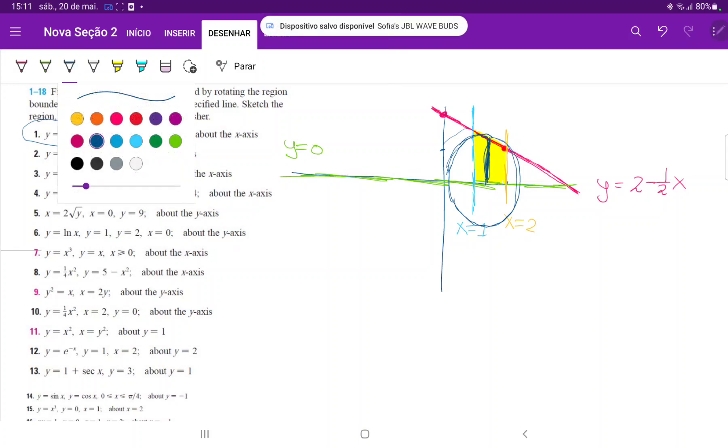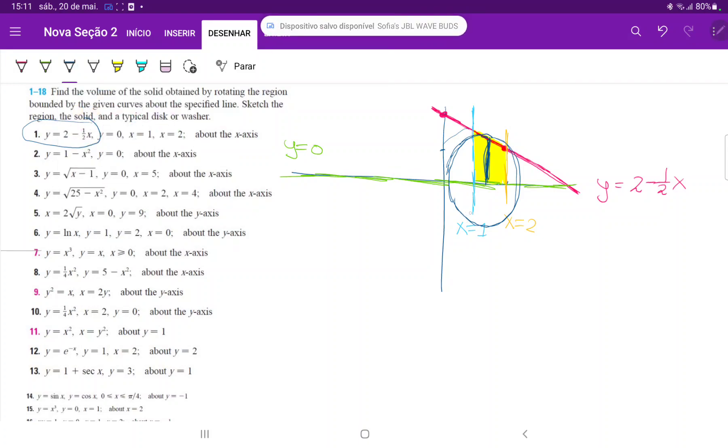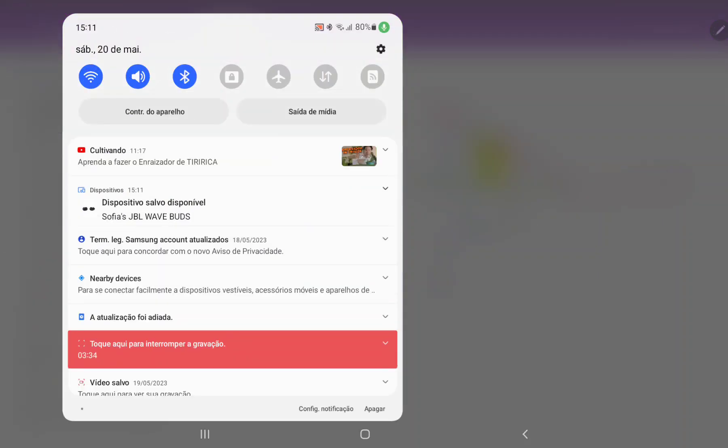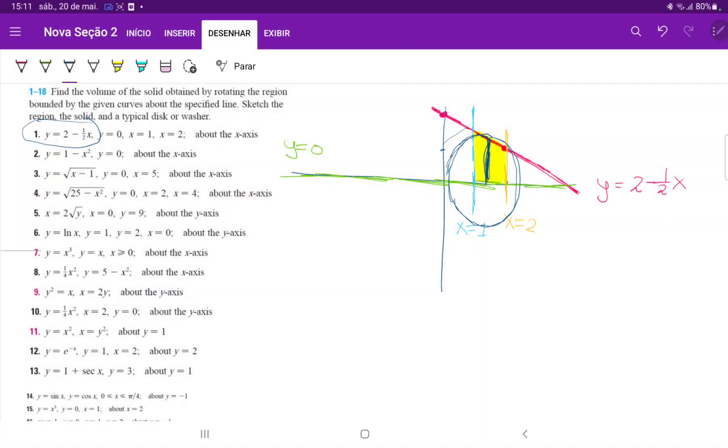So this integral, we do have our bounds of integration, because we begin at 1 and we end at 2. So we're going to go from 1 to 2. Now we're summing up the area of these disks, so we're summing up our pi times the radius squared, which is the radius is our height. But our height changes at every single point.